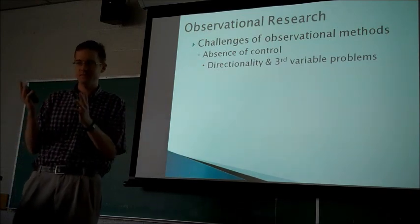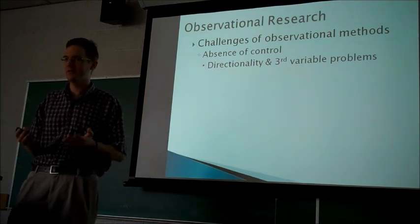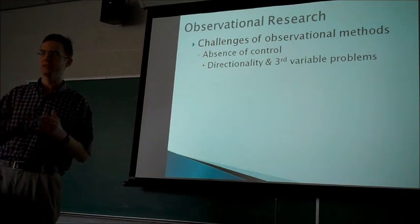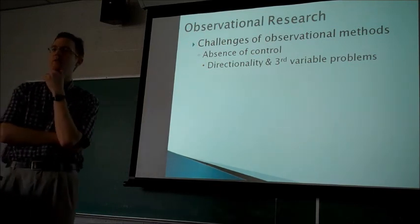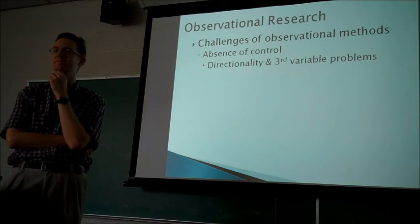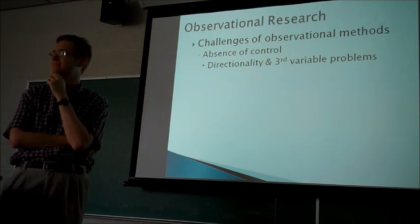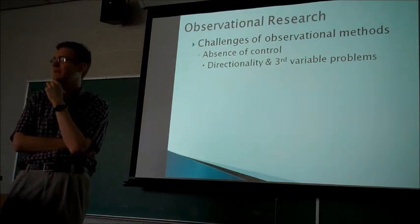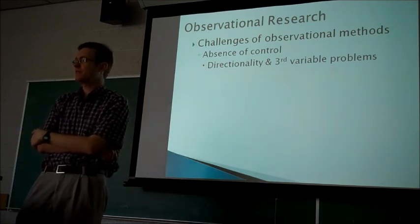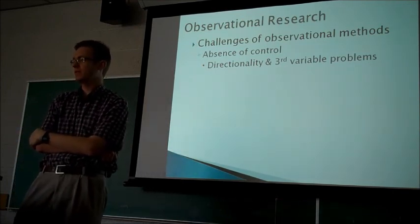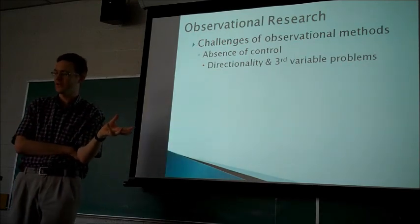If you're observing two things and they're happening at about the same time, it's hard to say what direction causality is running. And then the third variable problem is that you could have some other variable that you didn't even think to observe that's causing all the things that you are observing.